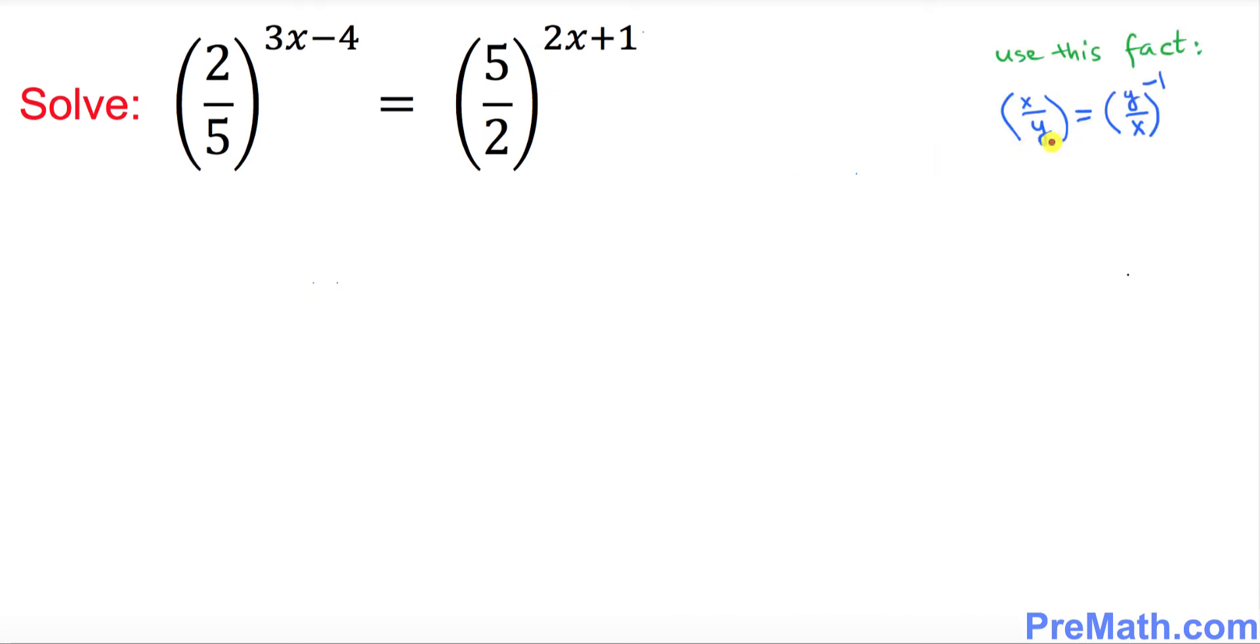So we're going to be using this fact on the right hand side. If you have x over y and you put a reciprocal, then you must put a negative 1 as an exponent.